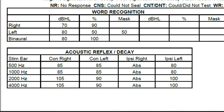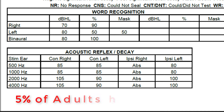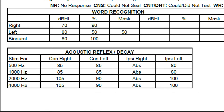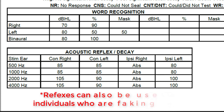However, this is not guaranteed, as approximately five percent of the adult population have absent reflexes even if their neural pathways are functioning properly. Sometimes elevated or absent reflexes could suggest the possibility of a serious medical condition, like an acoustic neuroma, which should result in a referral to a medical doctor, like an otolaryngologist. On other occasions, these reflexes are used to help identify if someone is faking a hearing loss, because if thresholds are present at normal levels, it is highly likely that the person being tested can actually hear sound.